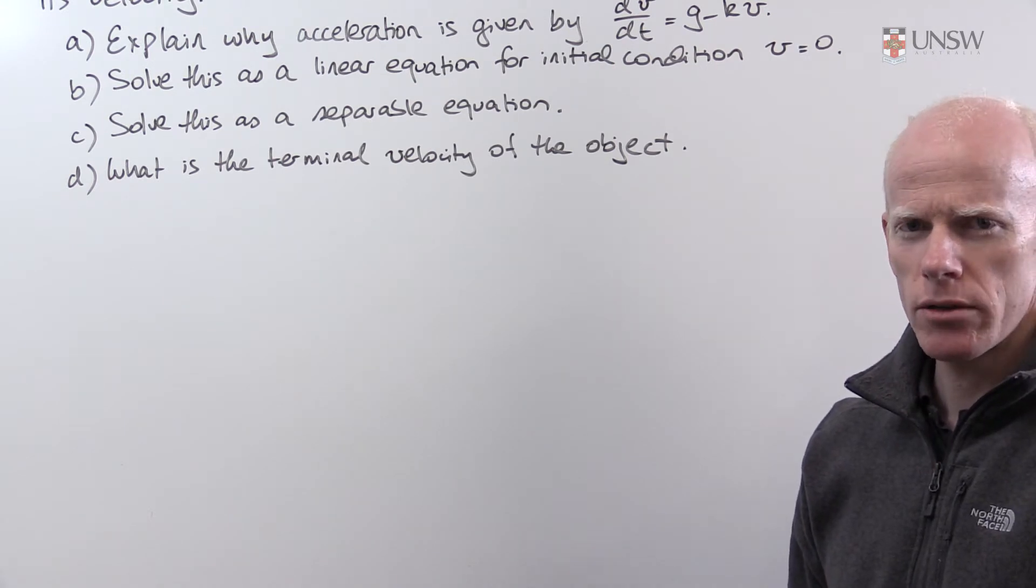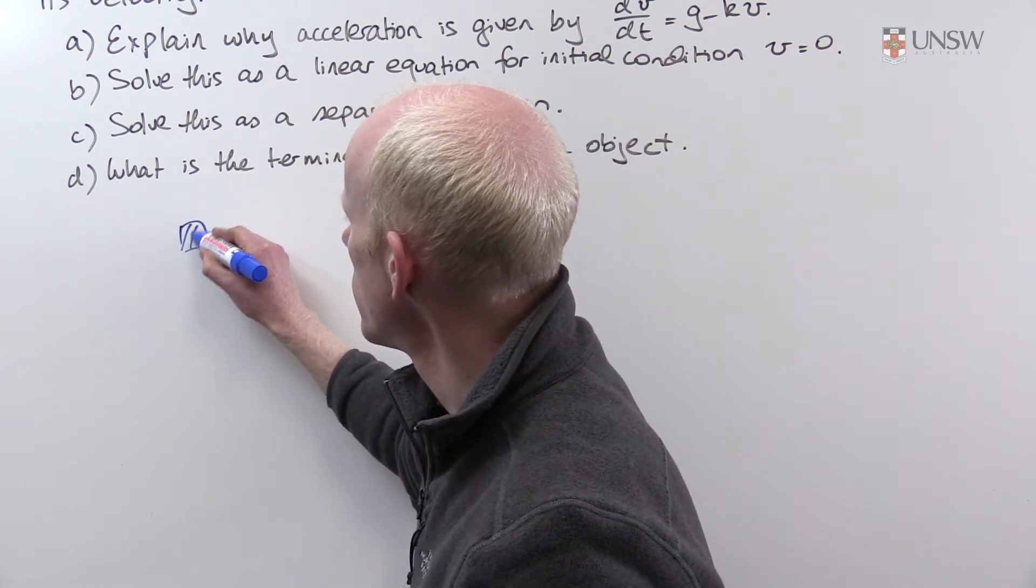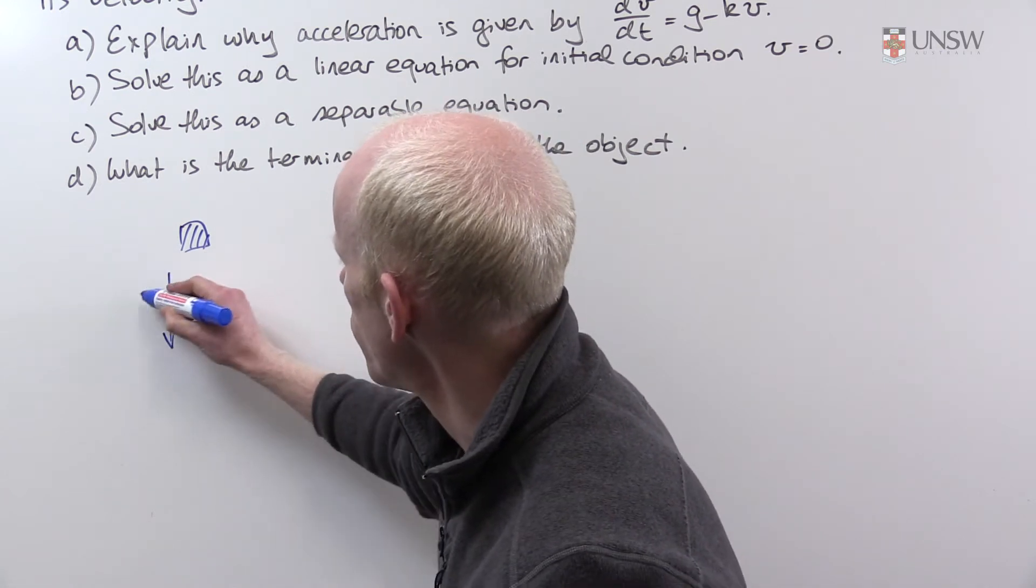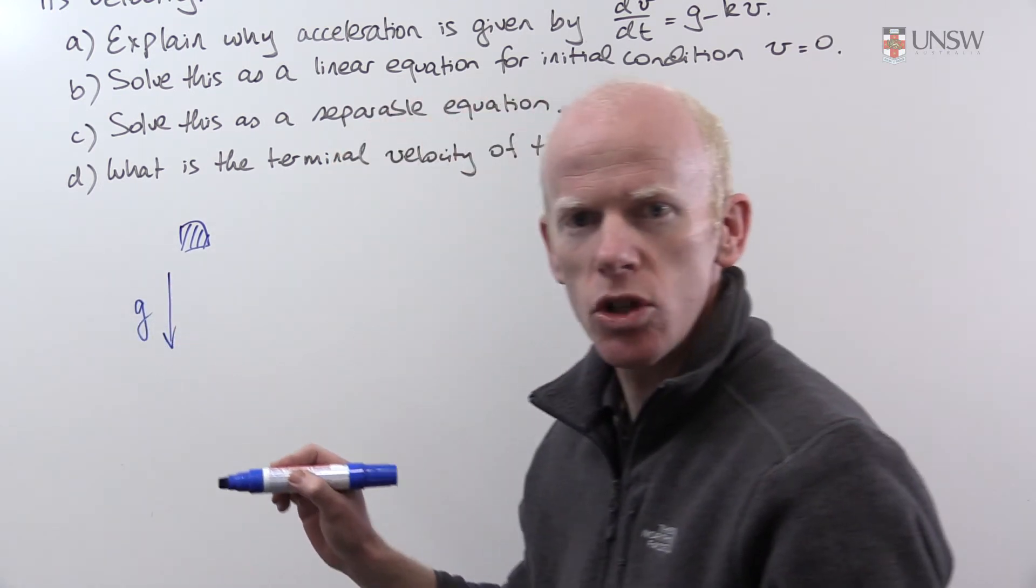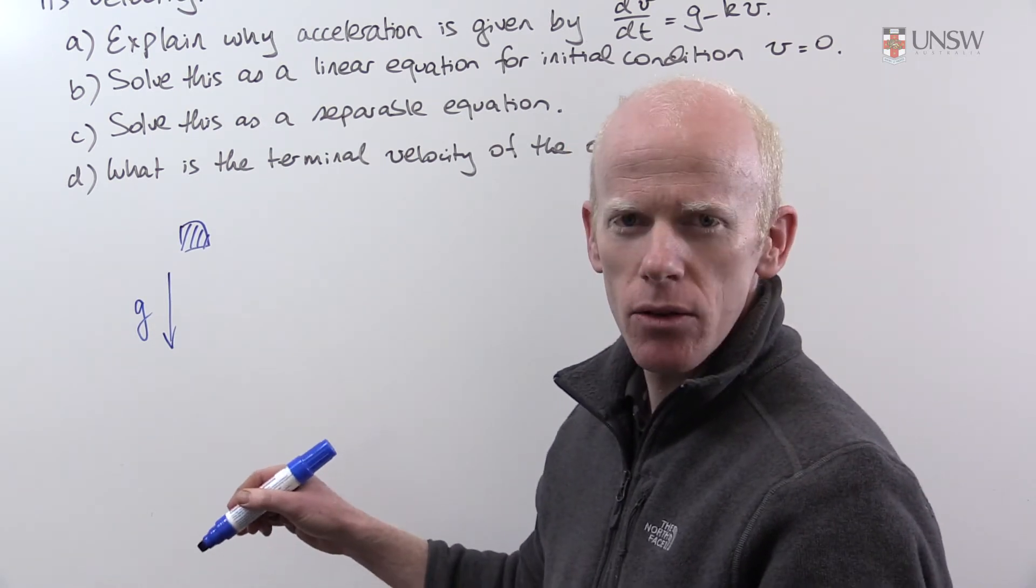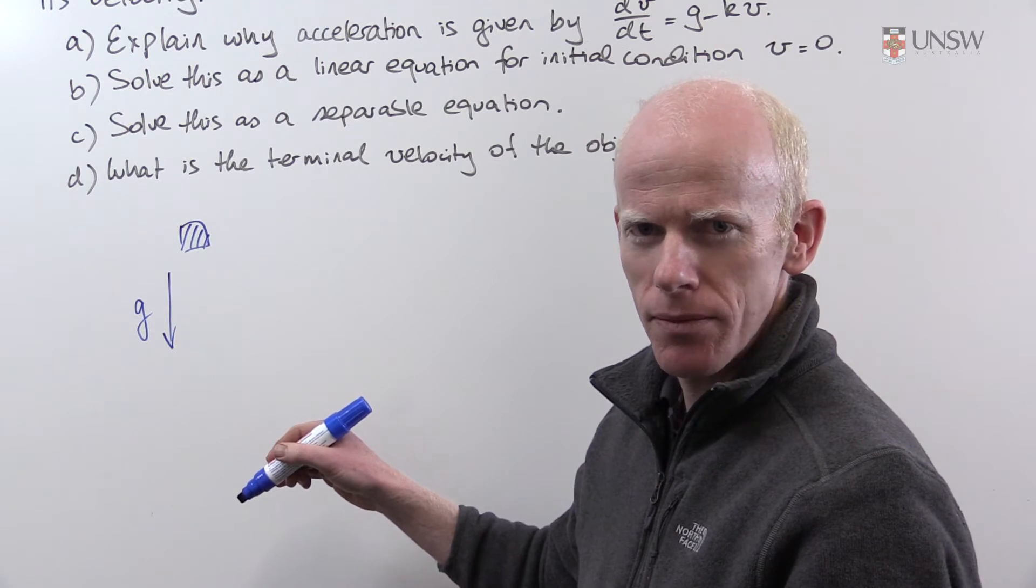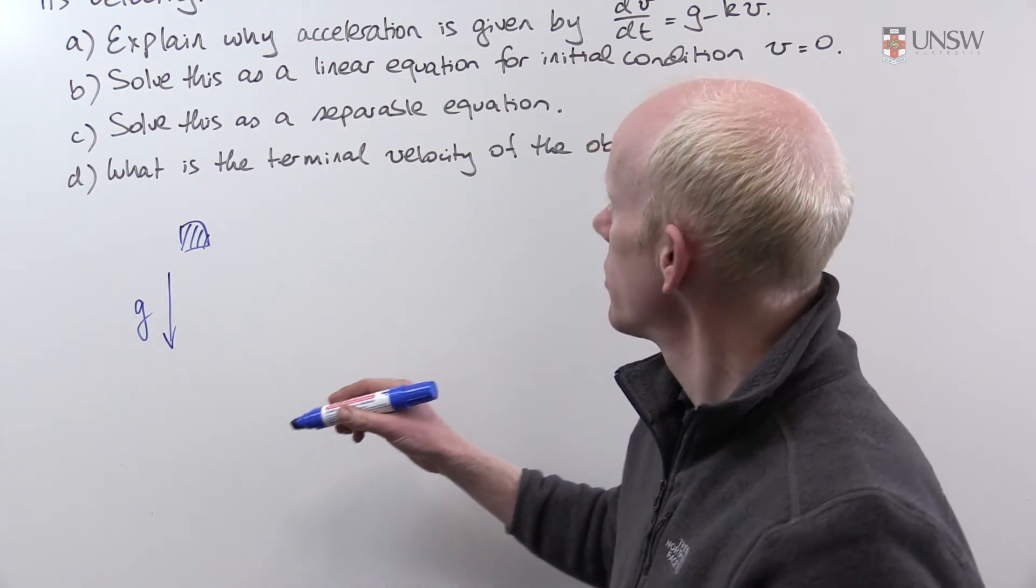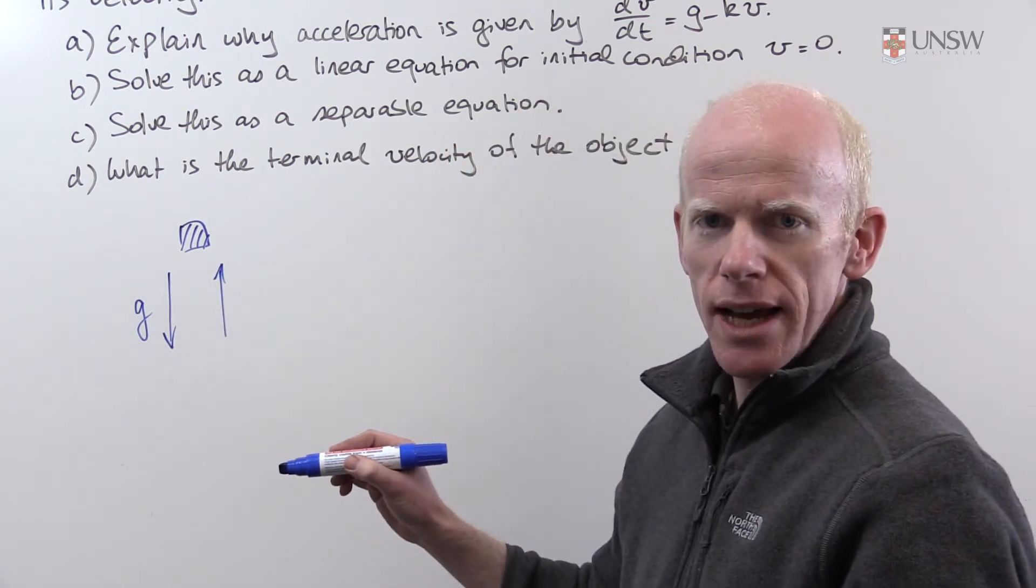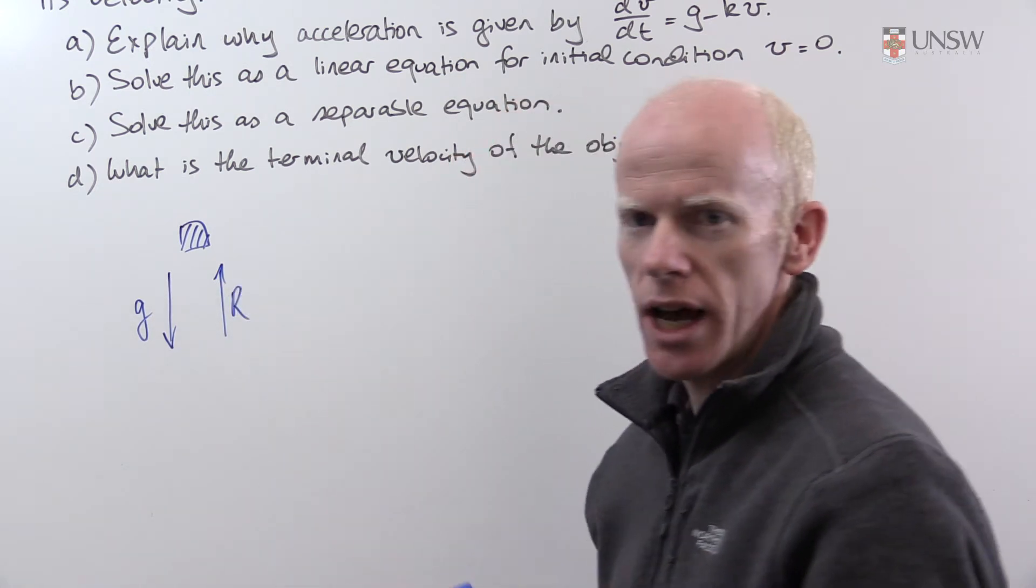Let's draw a quick diagram. Here's the object and the object falls under the force of gravity which we'll denote by g, and we'll note that we define the positive direction of motion to be downwards. The falling object experiences resistance acting in the opposite direction to gravity. I'll call it R.